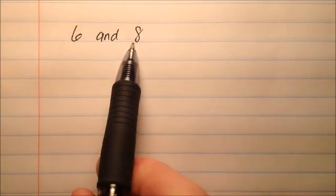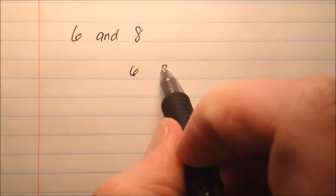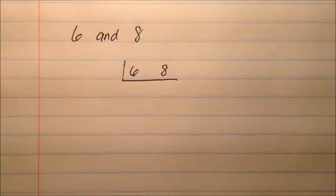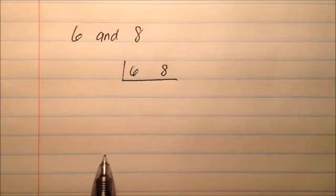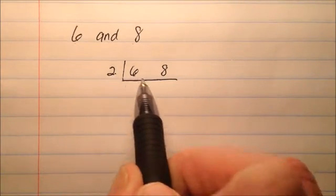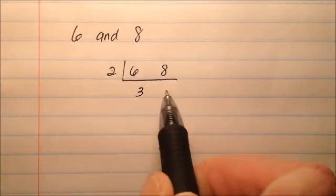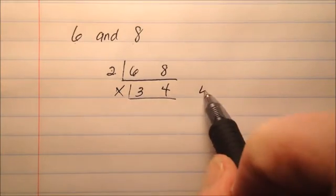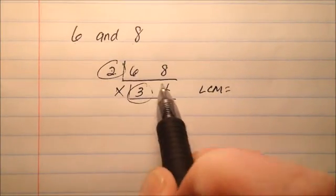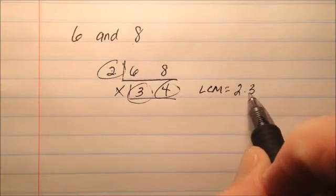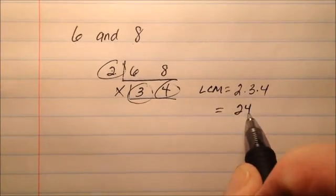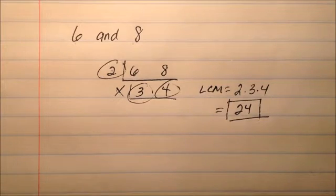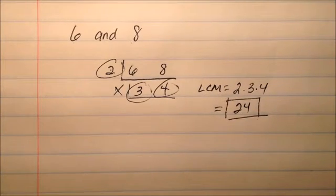In the next example, we're going to find the least common multiple of 6 and 8. I'll put them in my little division-like situation. 6 and 8 share the common factor 2, so 6 divided by 2 is 3 and 8 divided by 2 is 4. Since 3 and 4 have no more common factors, the least common multiple will be 2 times the leftovers — 2 times 3 times 4 — and that's going to be 24. So for 6 and 8, the least common multiple is 24.